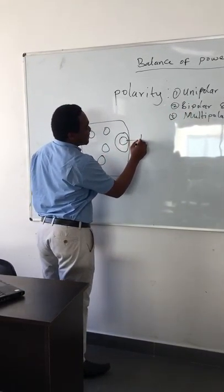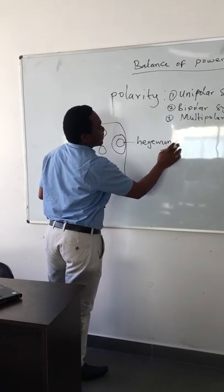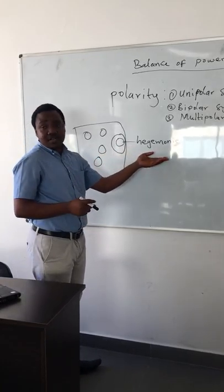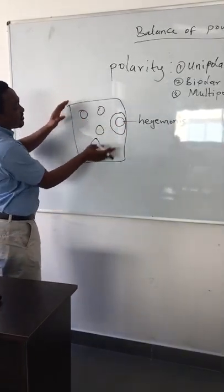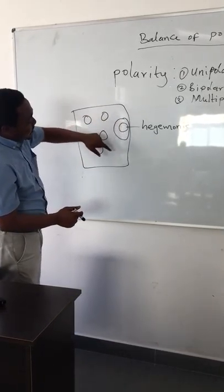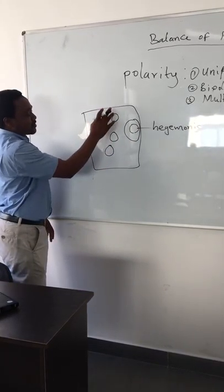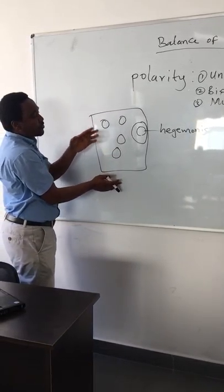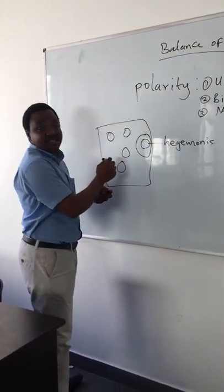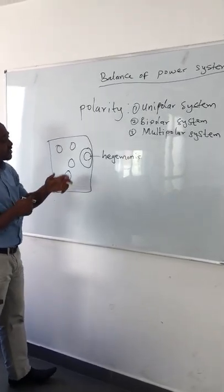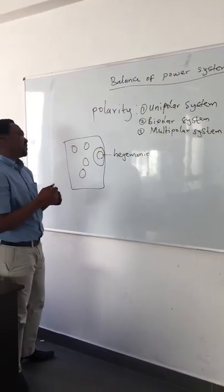We call this situation hegemonic. Hegemonic is when one state within the international system — considering these five states — has the biggest power, the upper hand, over the others. So this state is having the hegemonic power within the five states in the international system. When you consider the unipolar system, it means that one state has big powers as compared to other states within the international system.